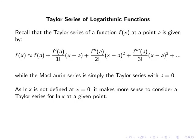Recall that the Taylor series of a function f of x at a point a is given by f of a plus f dash of a over 1 factorial by x minus a, plus f double dash of a over 2 factorial by x minus a squared, plus f triple dash of a over 3 factorial by x minus a cubed, and so forth. The Maclaurin series is simply the Taylor series with a equals 0.